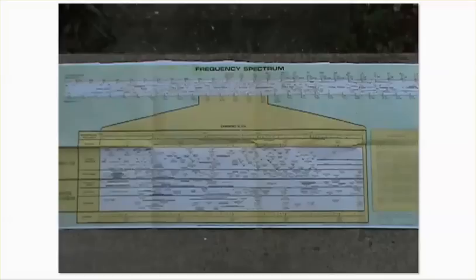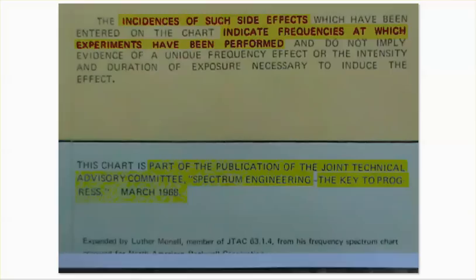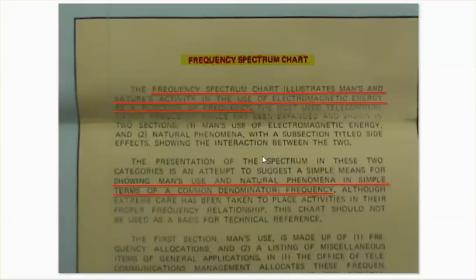Hi everybody, it's July 31, 2018. I'm going to try to do this quickly — just go through this frequency spectrum chart, which was copyrighted in 1968 by the Electrical and Electronics Engineers of the Rockwell Corporation. This was sent to me by a subscriber a long time ago. I have to just show you what is on this frequency spectrum chart. This frequency spectrum chart illustrates man's and nature's activity in the use of electromagnetic energy as a function of frequency.